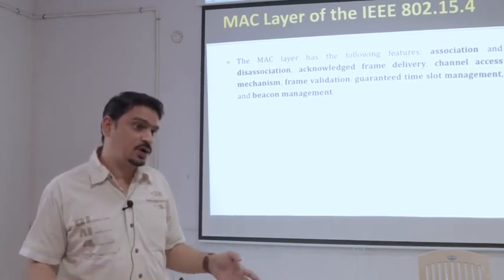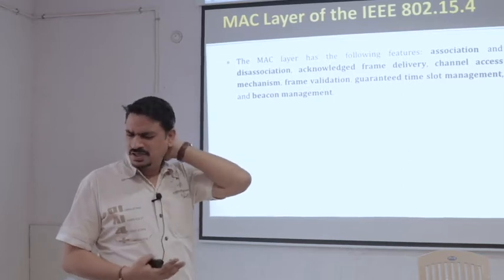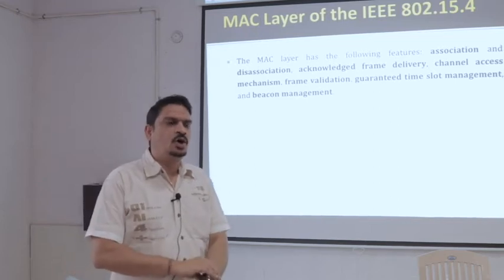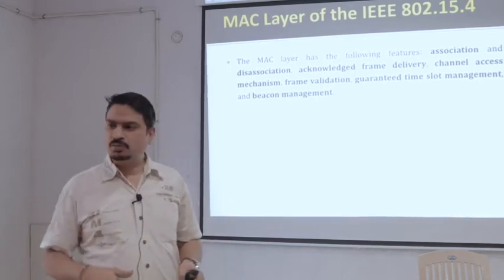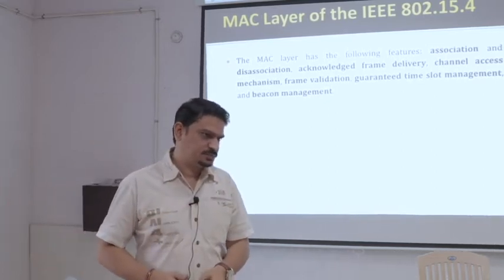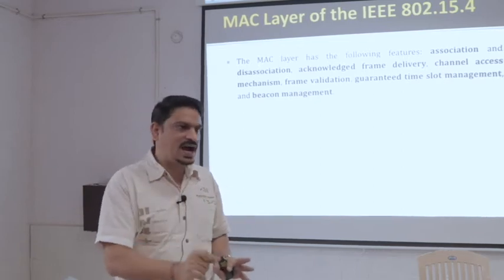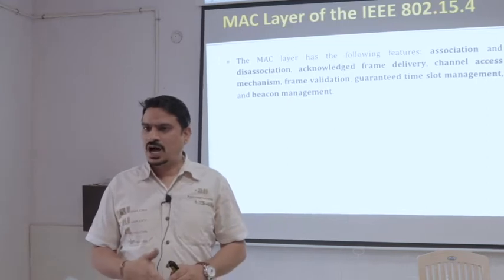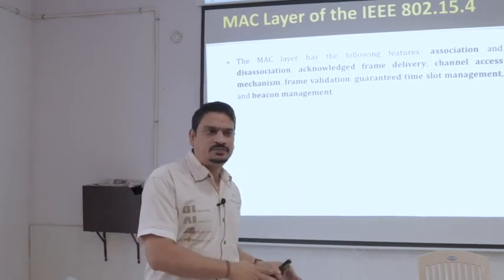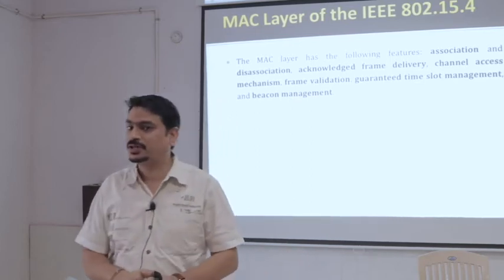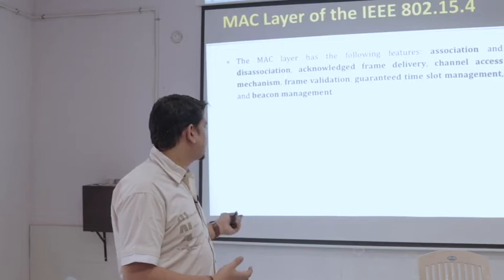There are different MAC protocols used by 802.15.4. One of them is called S-MAC — Sensor MAC. In S-MAC, the whole time is divided into two parts: active mode and sleep mode. Active mode is again divided into two slots: receiving slot and sending slot. So whenever a node is in active mode it will either be sending or receiving data. Let's say we have a cycle of 20 seconds — 10 seconds they are sleeping, 10 seconds they are active. In that 10 seconds, 5 seconds is for receiving and 5 seconds is for sending.